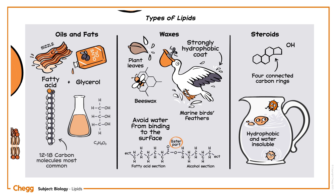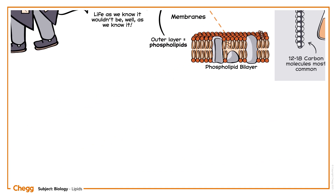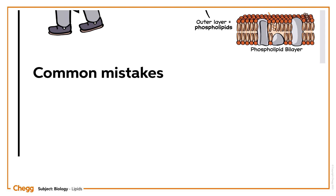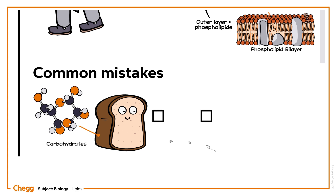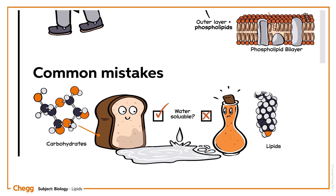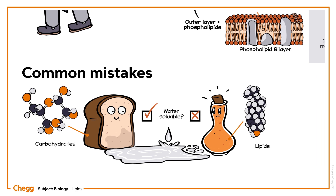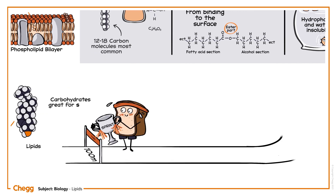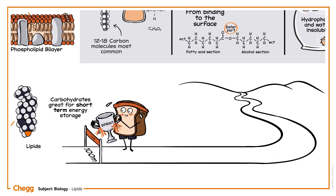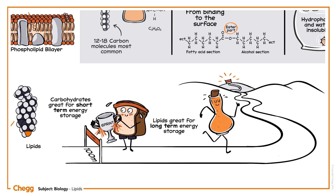So we've learned that lipids are primarily used to store energy and relay signals throughout and within cells. You may be wondering, then, how they differ from carbohydrates. Don't carbohydrates also store energy? Well, the main difference is that carbohydrates are water-soluble, while lipids are not. Carbohydrates, unlike lipids, are able to form polymers, and this, combined with their water solubility, makes carbohydrates great for short-term energy storage, while it makes lipids great for long-term energy storage.